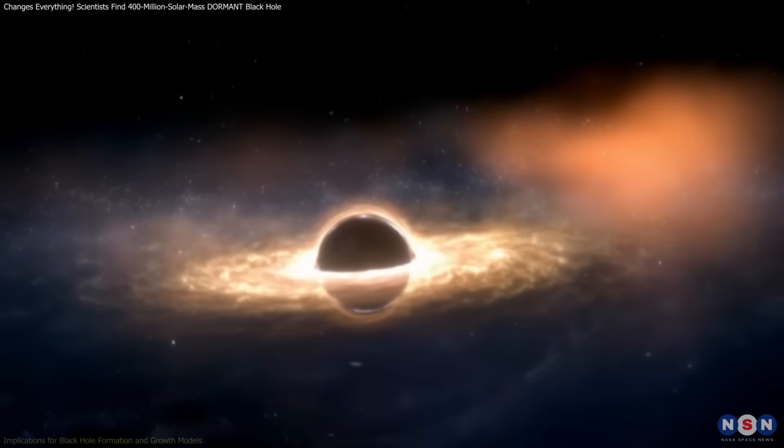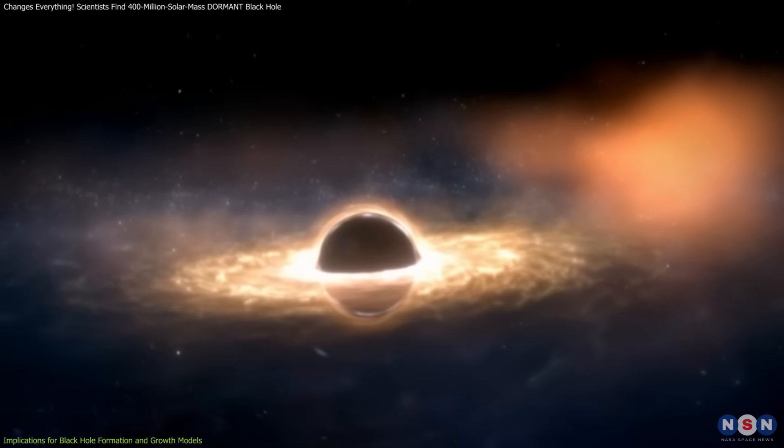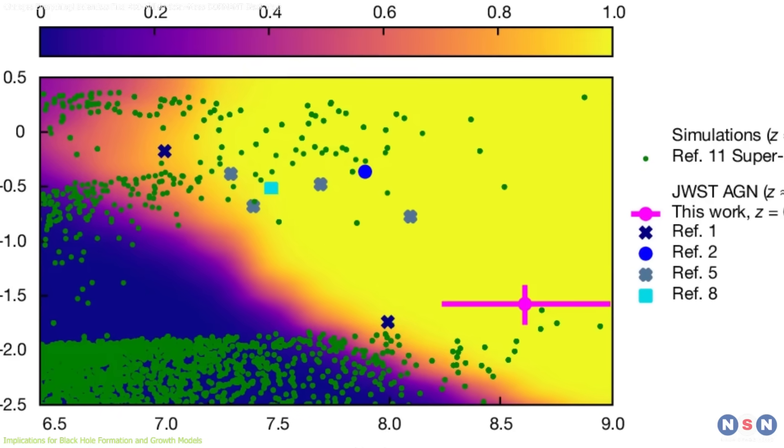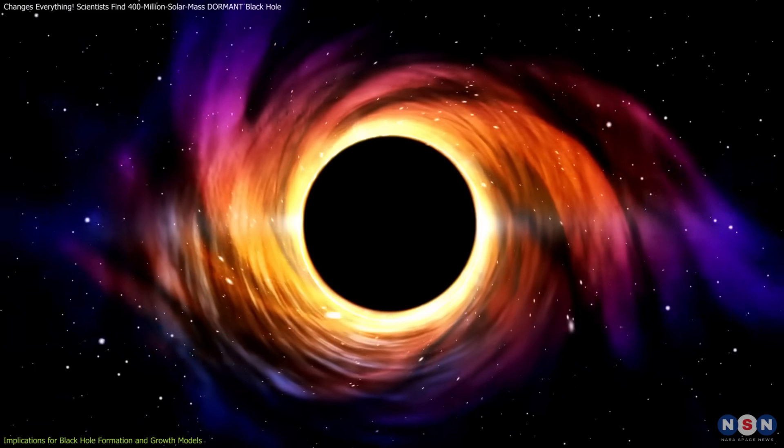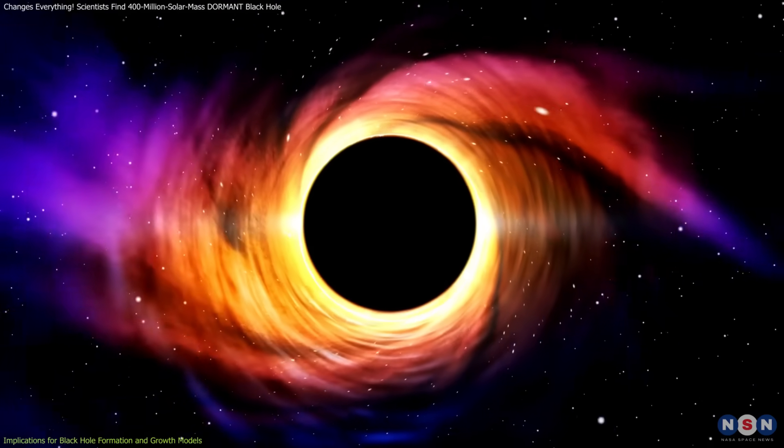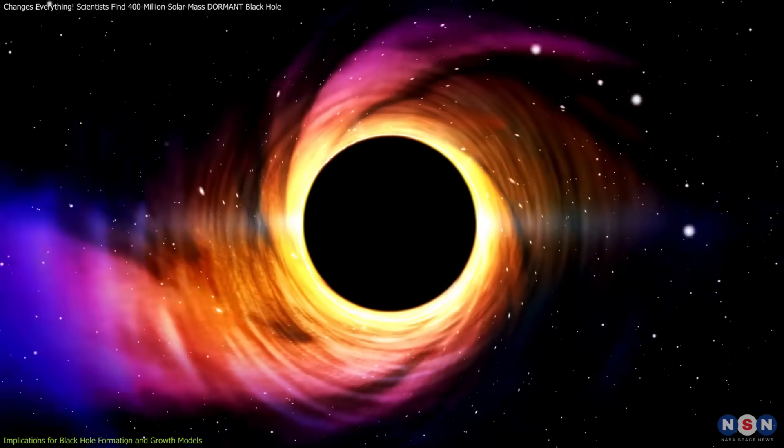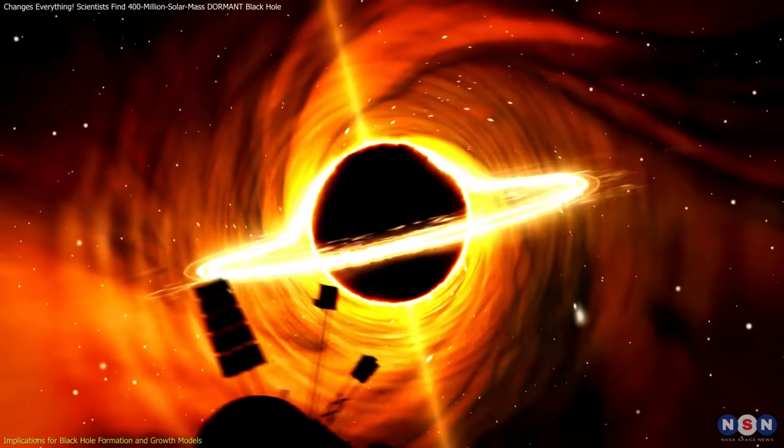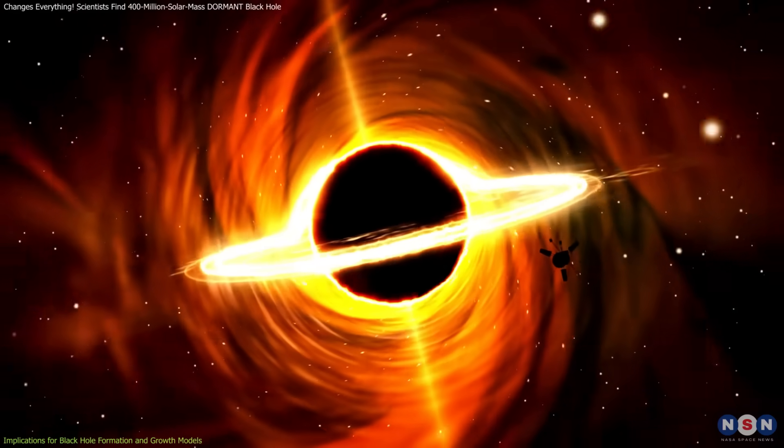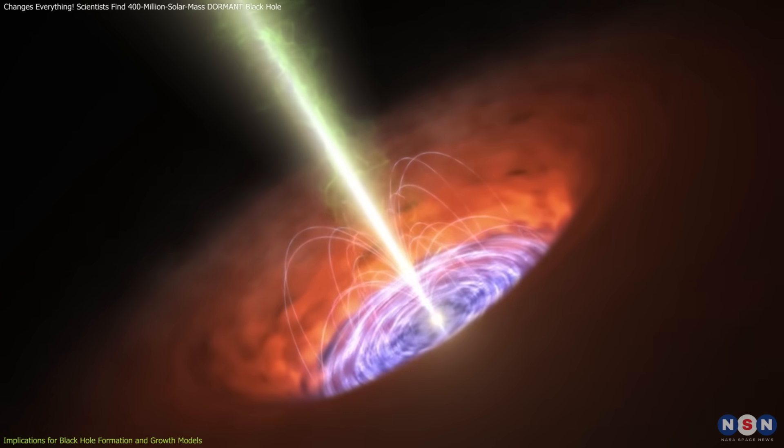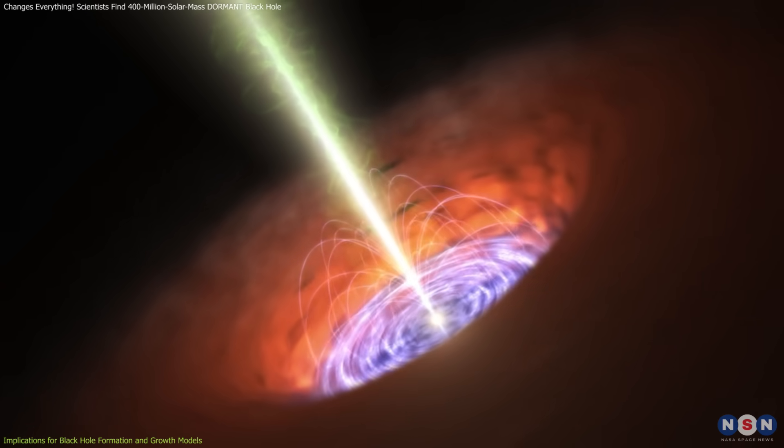Traditional models suggest that black holes grow steadily over time, but this find hints at a more chaotic, unpredictable process. In standard astrophysics, black holes grow by consuming gas and other matter around them. This process, regulated by the Eddington limit, ensures that the rate of growth doesn't exceed the balance of gravitational pull and radiation pressure.